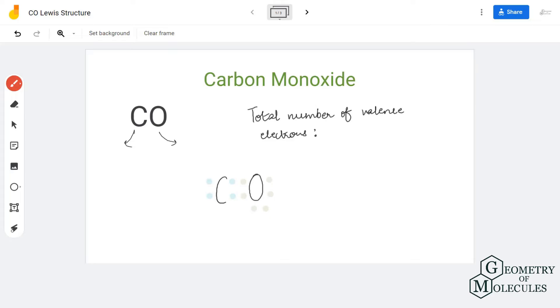Hi guys, in this video we are going to look at the total number of valence electrons and Lewis structure of carbon monoxide. To know the Lewis structure of any given molecule, it is vital to first know the total number of valence electrons. In carbon monoxide we have one atom of carbon and one atom of oxygen.